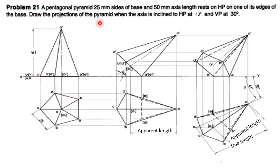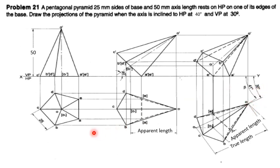Draw the projections of the pyramid when the axis is inclined to HP at 40 degrees — the axis must be inclined to HP at 45 degrees as seen in the front view — and inclined to VP at 30 degrees, which can be seen in the top view. Now we'll see the construction: first draw AE perpendicular to the XY line.